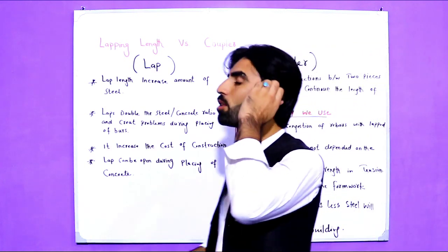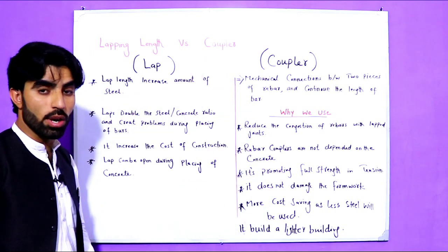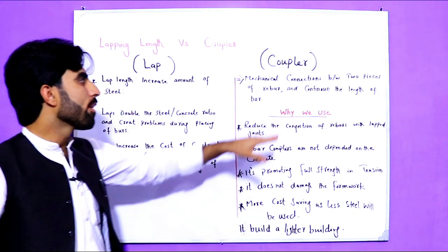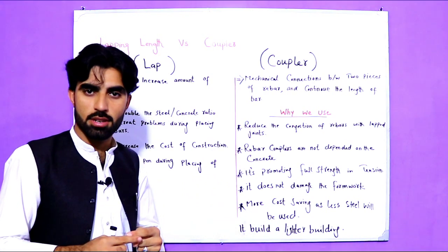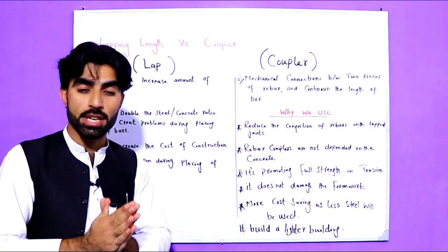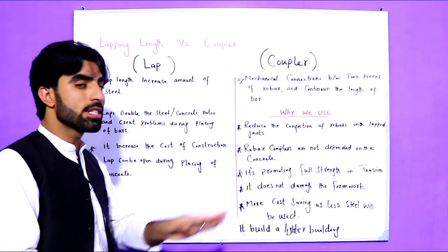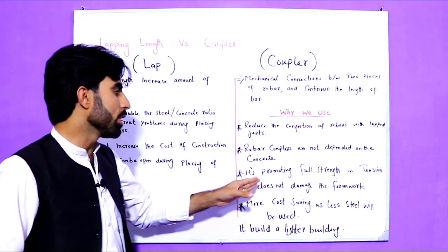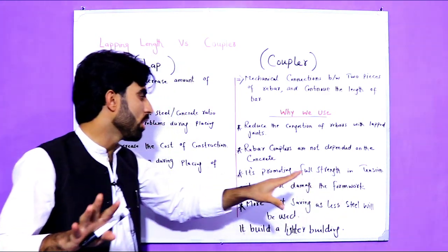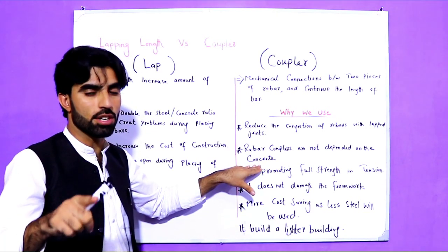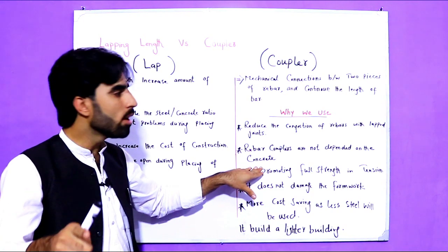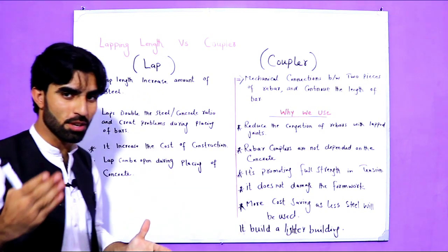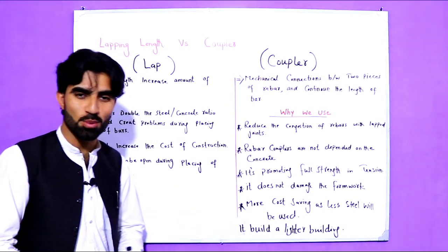These are some useful points related to lap length versus coupler. If you have any questions, comment below and I will try to reply. My recommendation is to use the coupler for connection of two rebars in RCC slab, beam, and column — because you get full strength, it saves the cost of the project, it reduces steel amount, it promotes strength and tension, and the rebar is not dependent on any type or grade of concrete. So which one is the best? Thanks for watching, see you in the next video, goodbye.